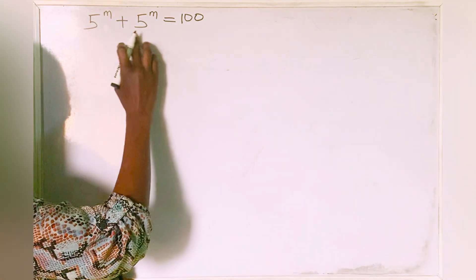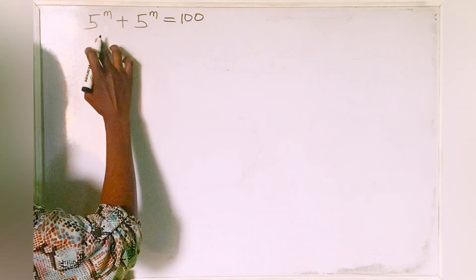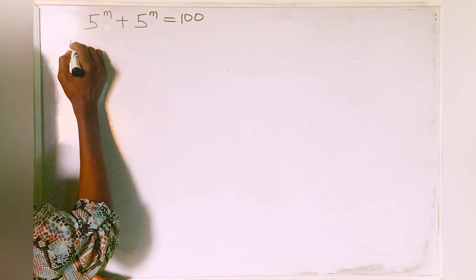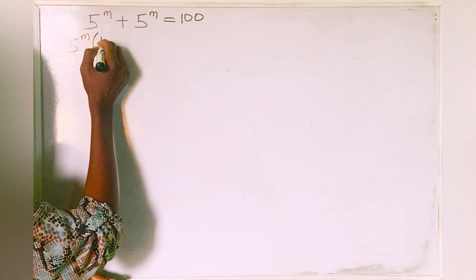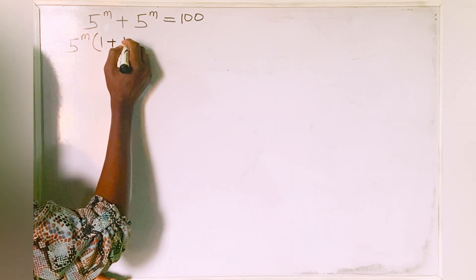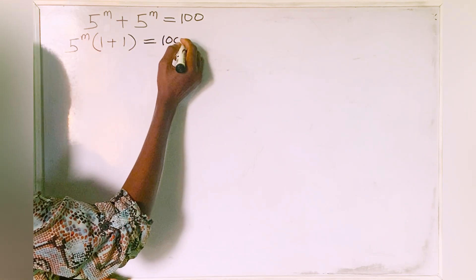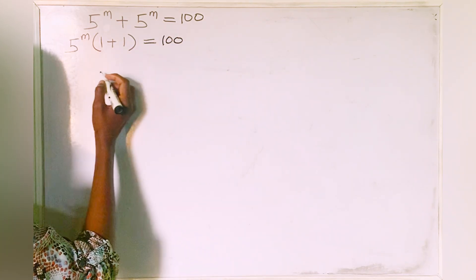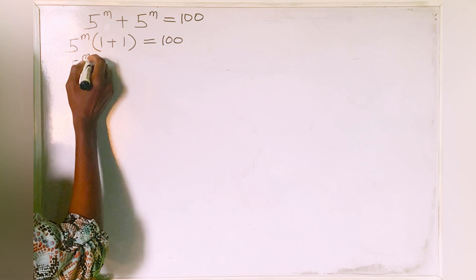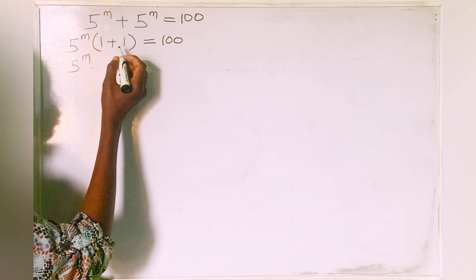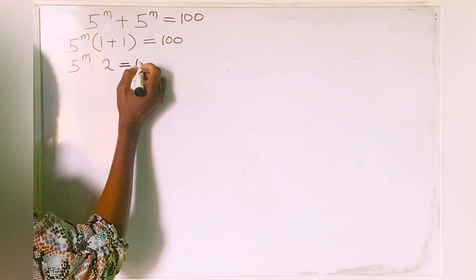Here, we are going to look for what is common in this equation. What is common is 5 to the power of m. So we say 5 to the power of m times 1 plus 1 is equal to 100. Now we have 5 to the power of m multiplied by 2, and that is equal to 100.